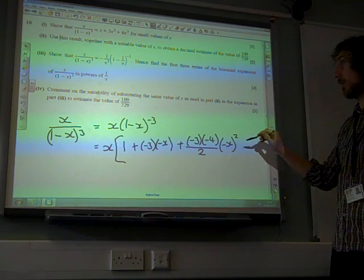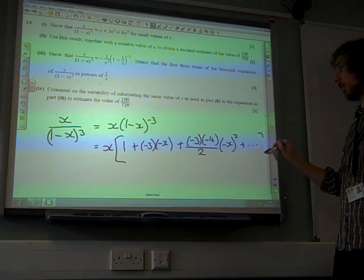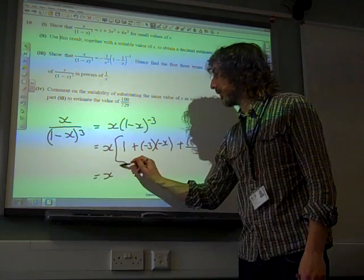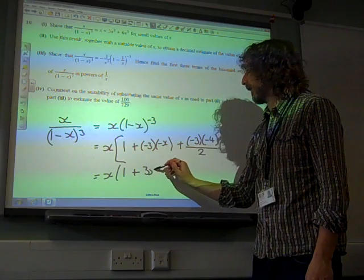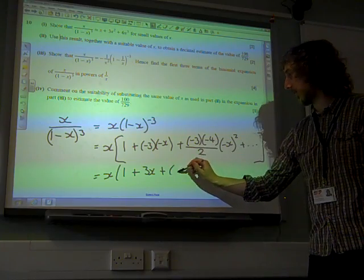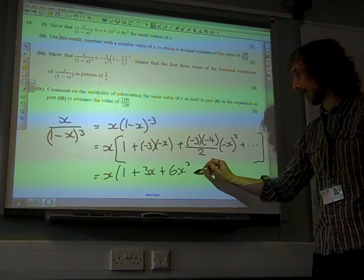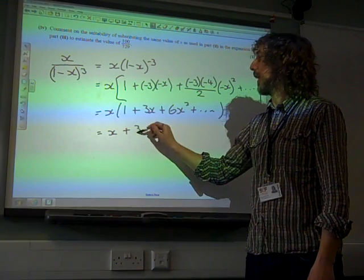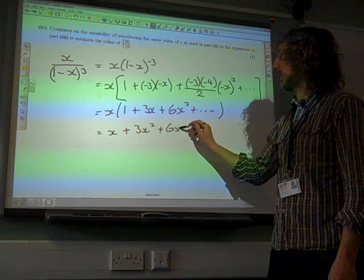And we've got three terms to do, haven't we? We're going to go up to x cubed, so we'll carry on, but we're not going to bother about it. So this gives us x times 1 plus 3x plus 4 over 2 is 2, times 3 is 6, x squared. Plus the plot, which is x plus 3x squared plus 6x cubed.